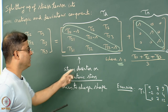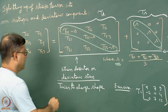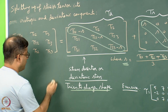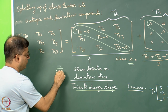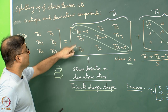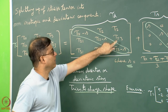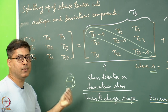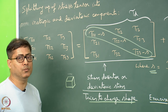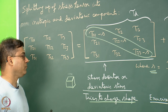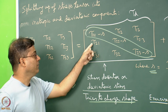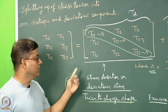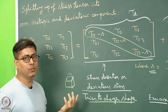Why do we separate the stress deviator and the spherical tensor? There is a physical meaning. The deviatoric stress tries to change the shape of the body. If I take a small cube, these magnitudes tend to deform it into some other shape — not a smaller or bigger cube, but a change in shape. It is not guaranteed that it will happen; if the stresses are small and the body is hard, it will not deform, but there is a tendency for the cube to change shape.